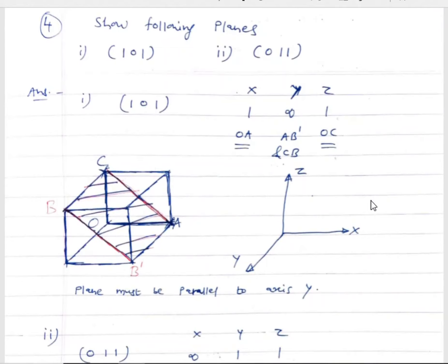For further practice, consider plane (1 0 1). The intercepts are 1, infinite, and 1 along axes X, Y, and Z respectively. From origin O, mark point A along axis X. Similarly mark point C along axis Z. Join A and C. Draw a line parallel to axis Y from both points, giving lines CB and AB'. Join the opposite arm BB'. This shaded plane is the (1 0 1) plane.